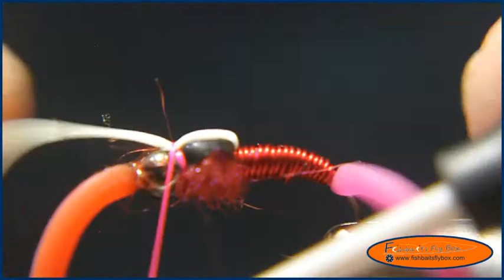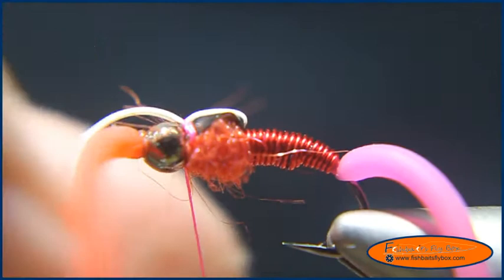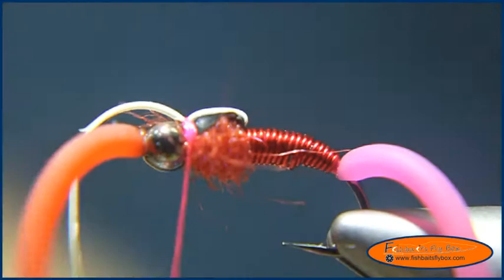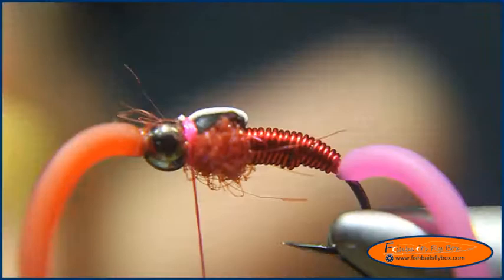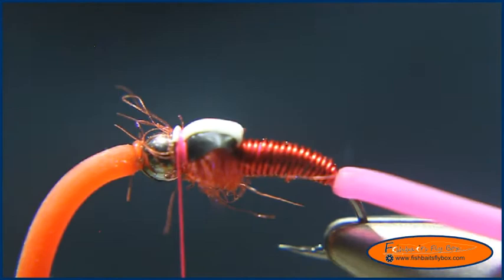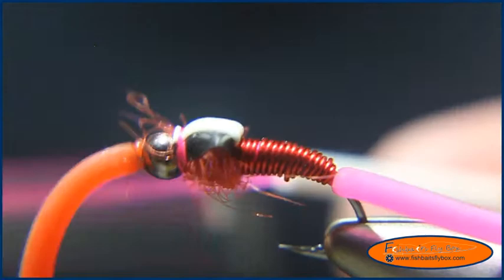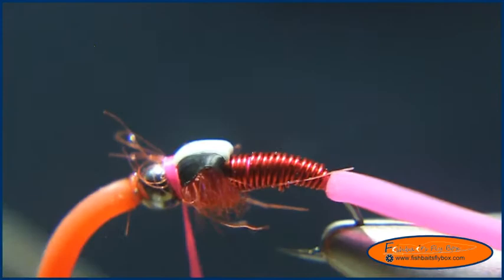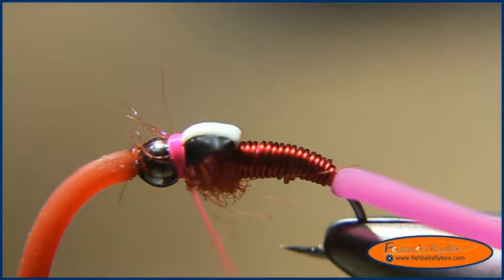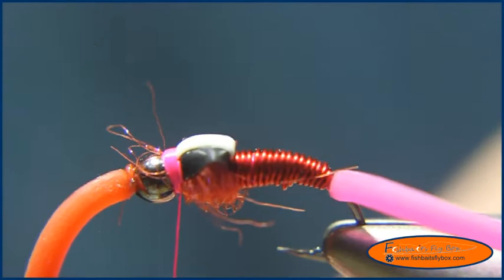Now I'm going to take this Atomic Glow, bring it over. And then we'll bring, again, cautious of the number of wraps we're using. And at this point I am going to take my whip finish and I'm not going to do a huge head on this right just yet. I'll use the whip finish to do the head. Again, watching for bulk on that thread head. I'll go ahead and cut the thread.